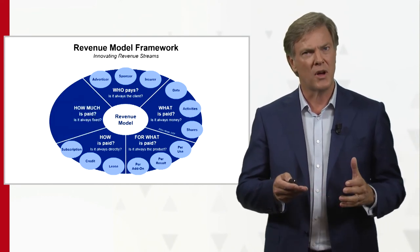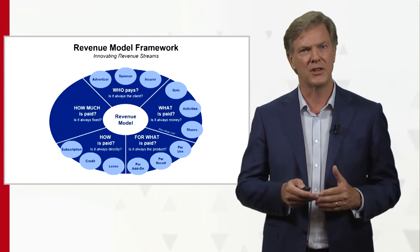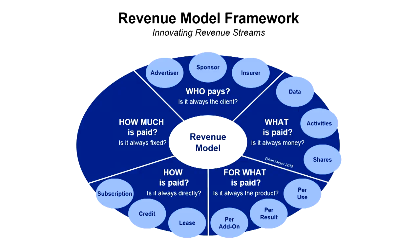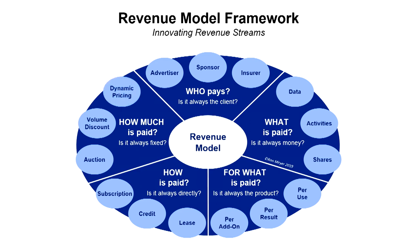The fifth question is: how much is being paid? Is it always a fixed amount? We could think maybe of having an auction, or maybe we should give volume discounts, or maybe we can go for dynamic pricing in which the price is dependent on the time of year, the time of day, or how many customers are actually waiting to get the product or service.